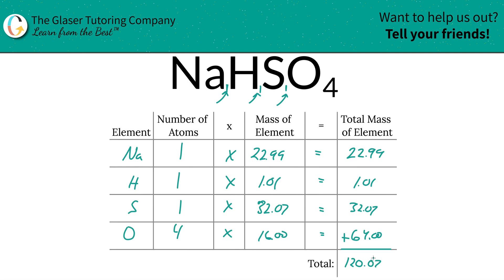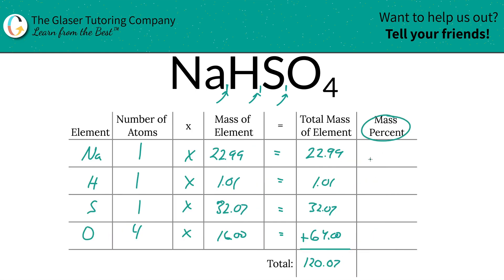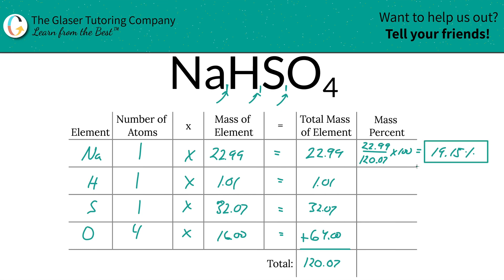Now I'm going to add a column to the table to find the percentages of each. To find the mass percent of sodium, we're simply going to take the total mass of sodium, 22.99, divided by the total mass of the entire compound, 120.07, and multiply that by 100. You do not have to worry about the units here because they will cancel. So that's 19.15 percent of sodium.